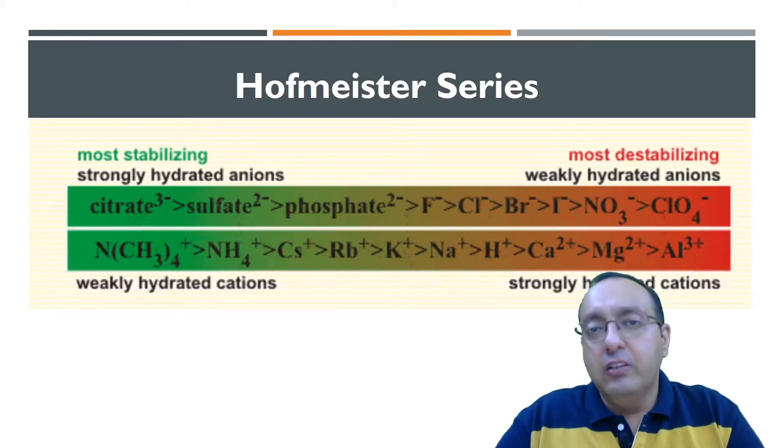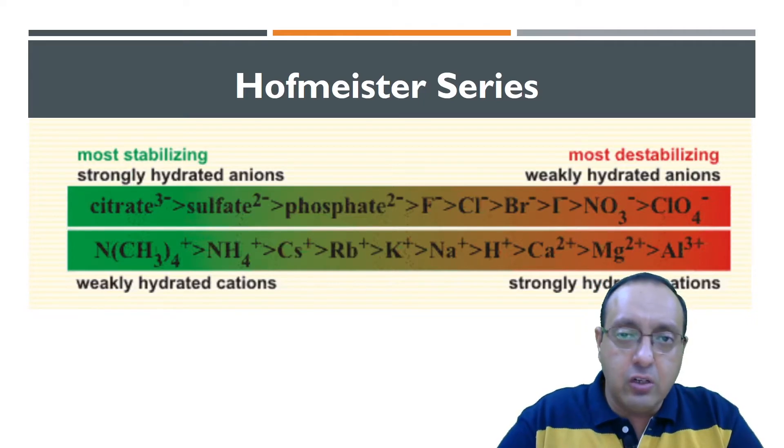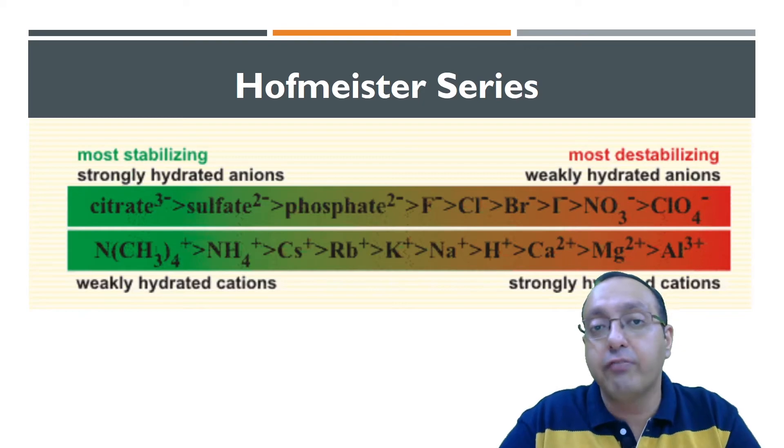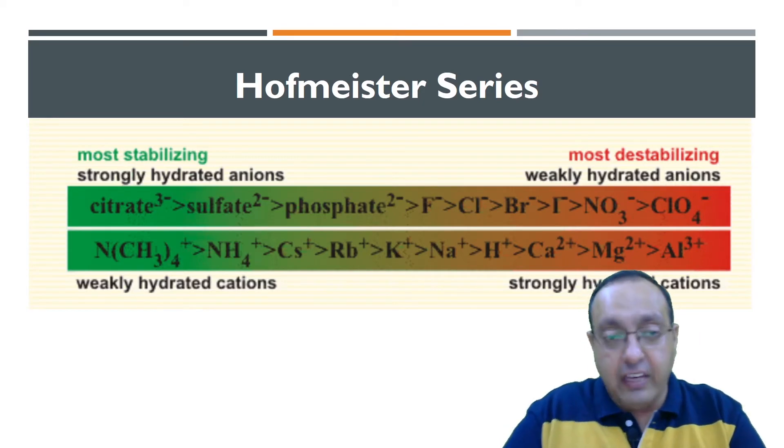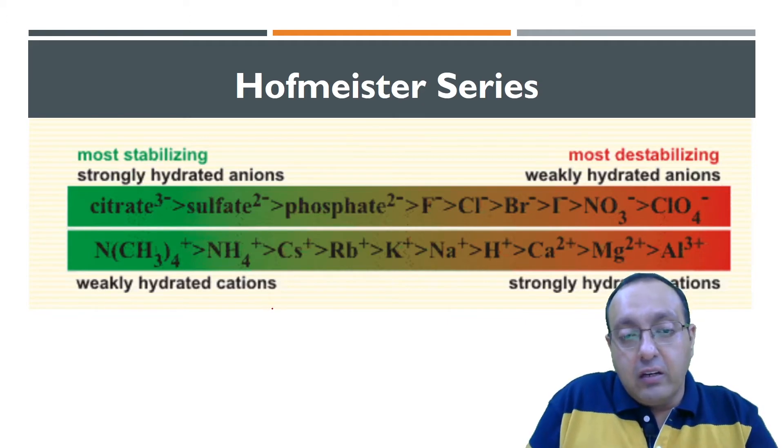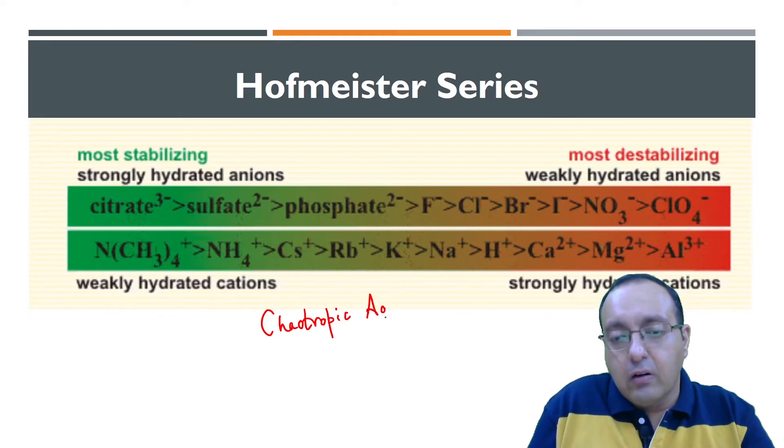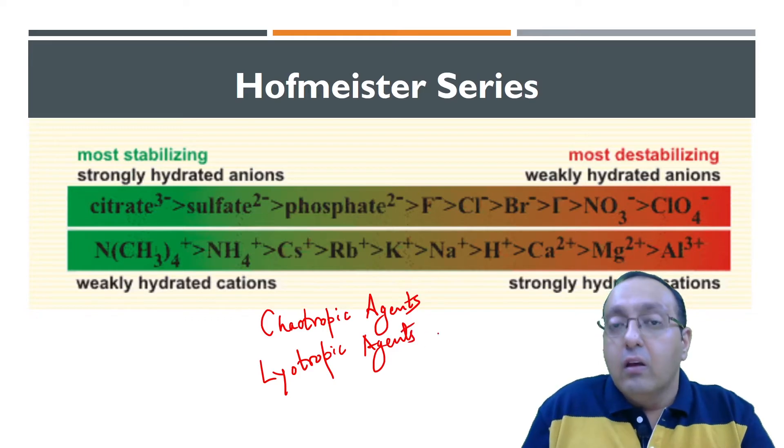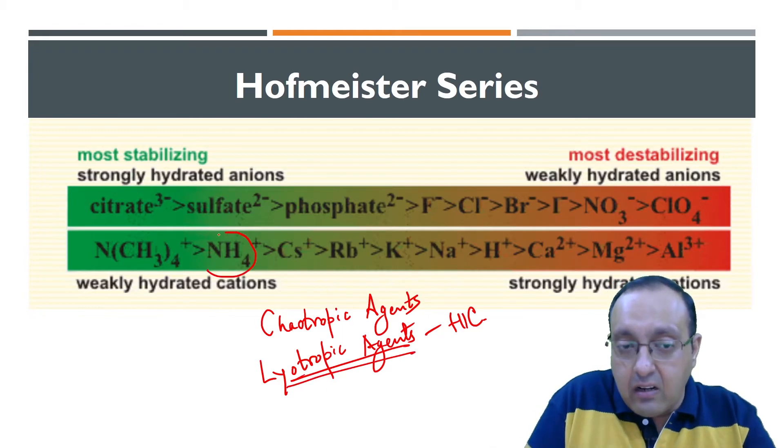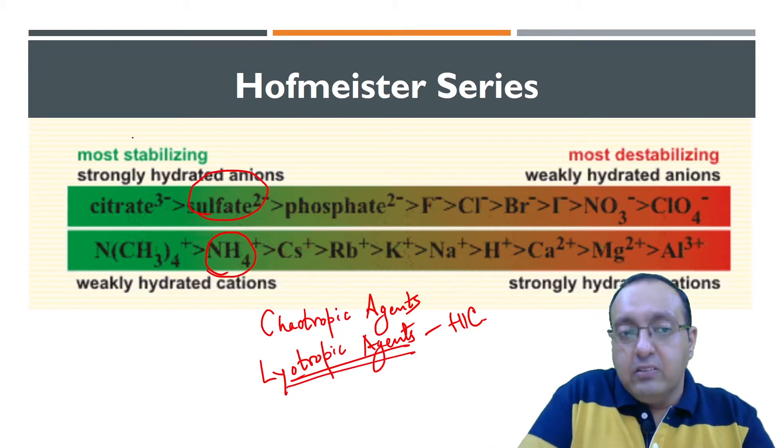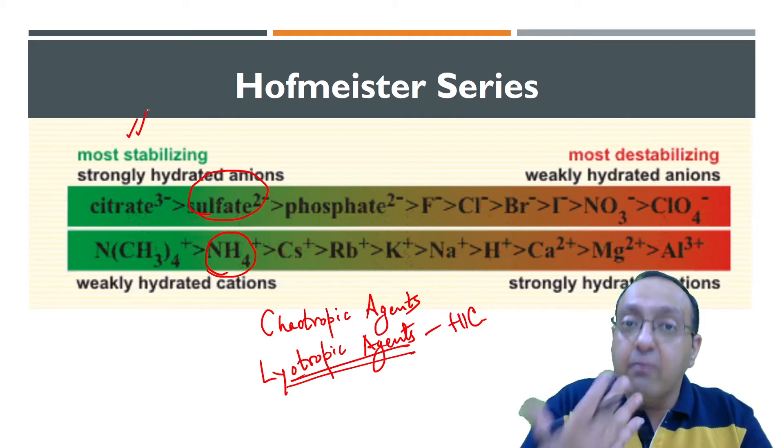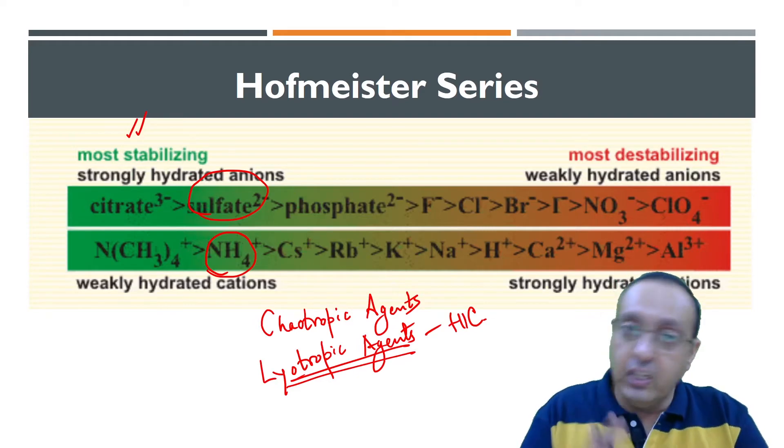Now the main component in driving the binding of proteins to the stationary phase is what is called the Hofmeister series of lyotropic agents. There are two types of agents which are called chaotropic agents and the others are called lyotropic agents. HIC or hydrophobic interaction chromatography uses the lyotropic agents like ammonium sulfate. These are most stabilizing, so they stabilize the binding of the proteins which are hydrophobic in nature to the stationary phase.